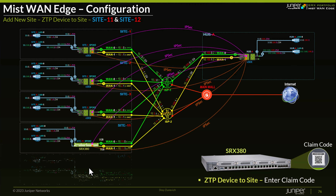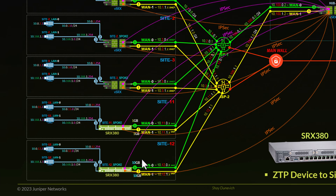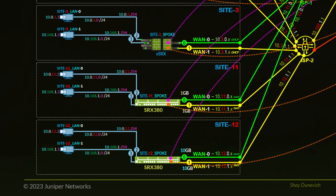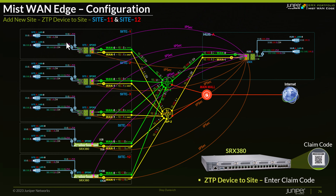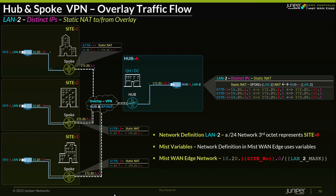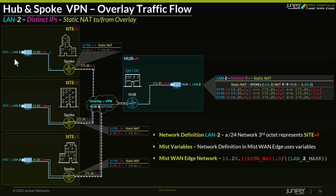We've added site 12 with 10-gig interfaces, also connected via the overlay with two IPsec tunnels. We've now added both physical SRX 380 devices to our lab setup. In the next segment, we'll continue describing our third use case, which is static NAT from and to the overlay using LAN 2 — that's going to be our third LAN segment that we'll add. We'll show you how to configure that use case as well. See you in the next section, and thanks for watching.